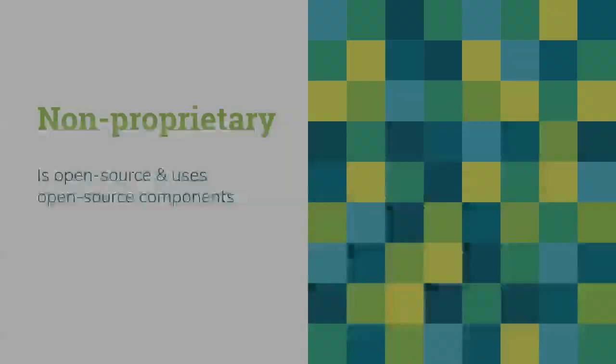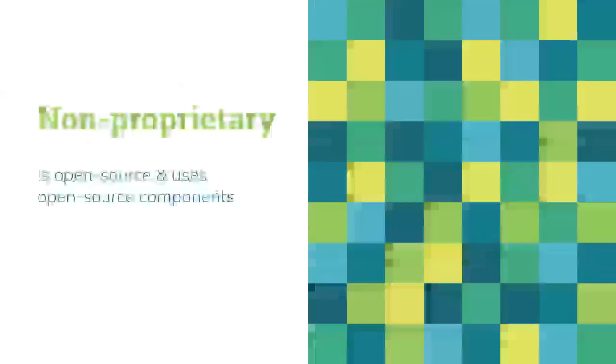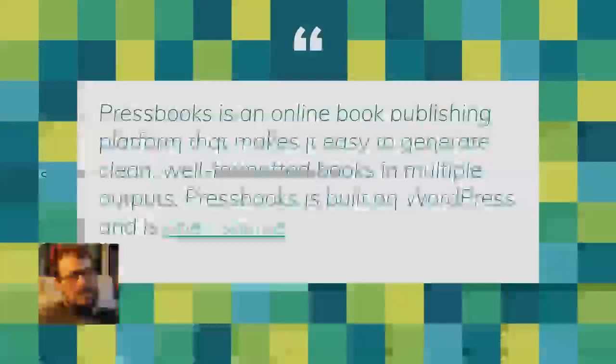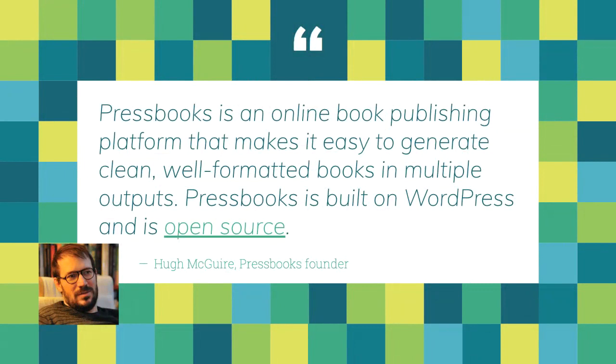First, is the platform non-proprietary? Meaning, is it open source and does it use open source components? In our case, Pressbooks is an online book publishing platform. It makes it easy to generate clean, well-formatted books in multiple outputs. Pressbooks is built on top of WordPress and is itself open source.